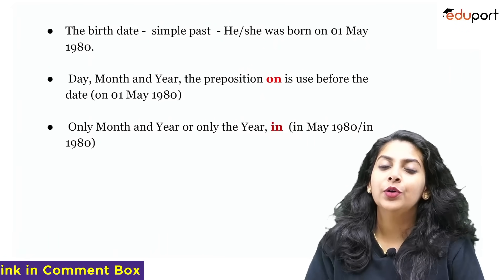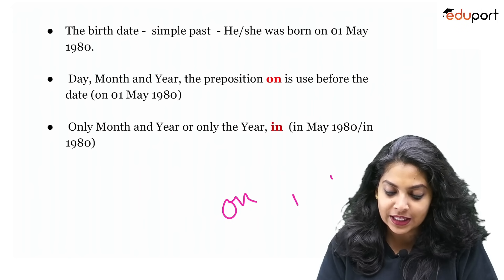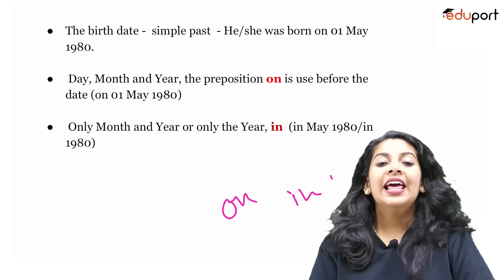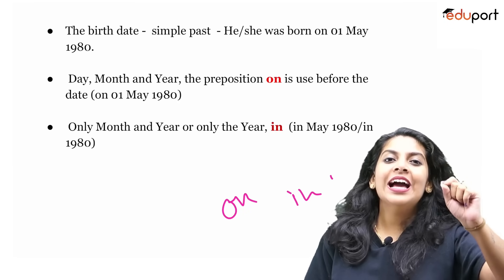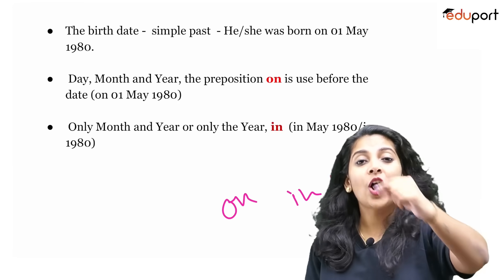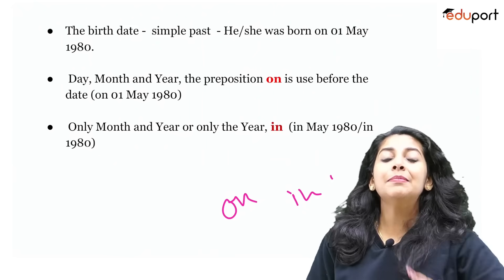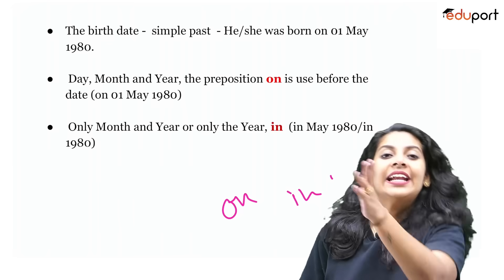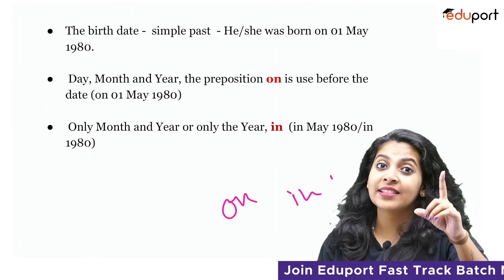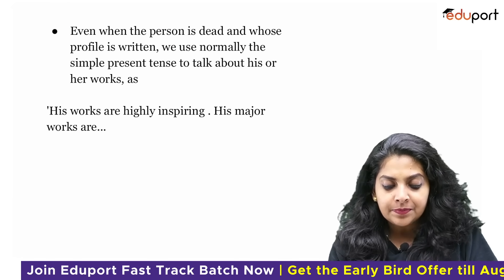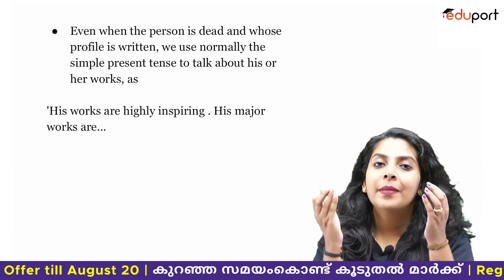Your name has been born — 'on' is used before the date. For example: India got independence on the 15th of August 1947. 'On' is used before the date, 'in' is used before the year. When the person whose profile is written is not dead, we use normally the simple present tense to talk about his or her work.